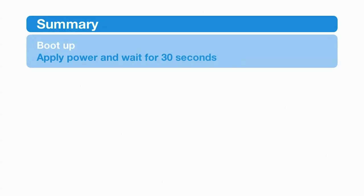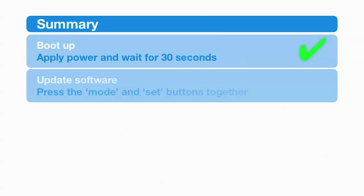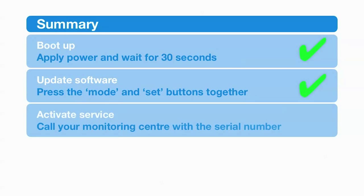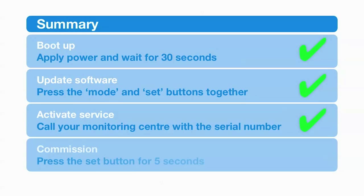To recap, the stages are: first, apply power and wait 30 seconds for the TCD to boot up. Second, press the set and mode buttons together to update the TCD with the latest software. Third, call your monitoring centre with the TCD serial number. And finally, press the set button for 5 seconds to commission the TCD ready for service.